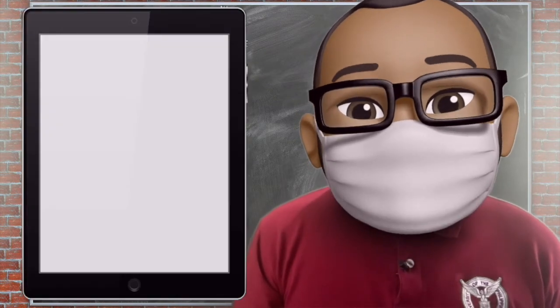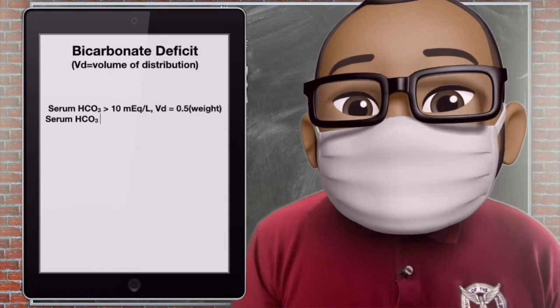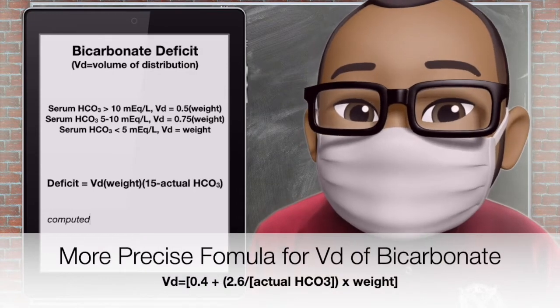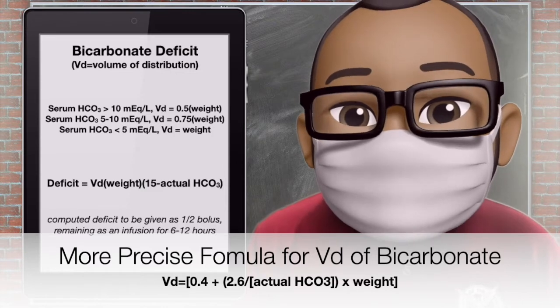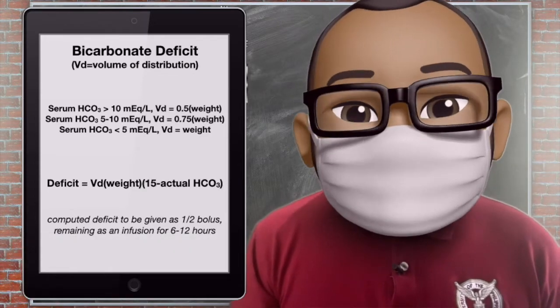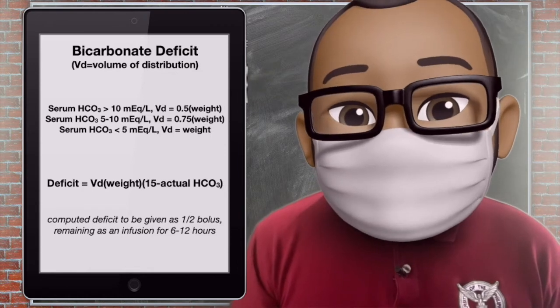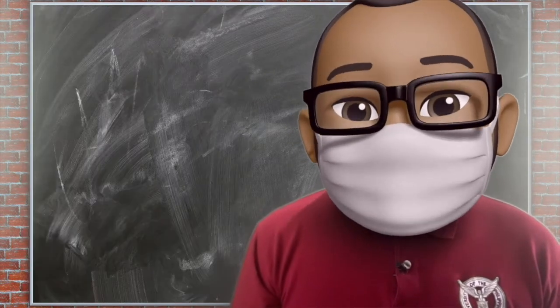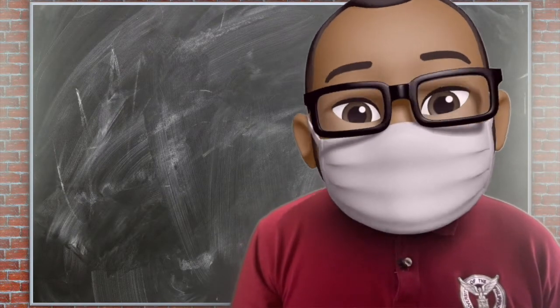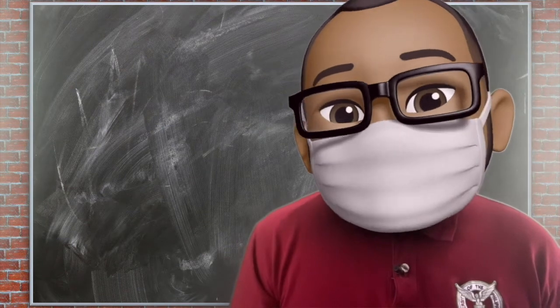How much bicarbonate? We calculate using the volume of distribution of bicarbonate, which is approximately that of total body water. If your serum bicarbonate is more than 10, the volume of distribution is 0.5 times the weight. If it's between 5 to 10, it is 0.75 times the weight. If it's less than 5, it is 1 times the weight. To compute the bicarbonate deficit: weight × volume of distribution × (desired bicarbonate of 15 minus actual bicarbonate). In patients with risk of overload, it is given as a continuous drip in IVF over 24 hours. Otherwise, we give half as a bolus and the remainder within 6 to 12 hours as an infusion.